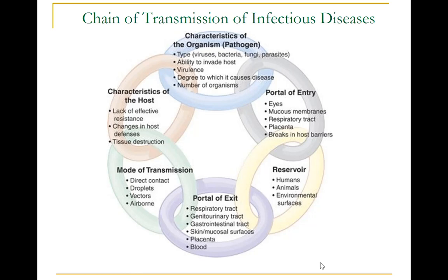This is known as the chain of transmission of infectious diseases. Infections can only spread when conditions are right. This set of conditions consists of six links, as shown here. When all the links are connected, infection spreads. Infection control and prevention provides the knowledge and skills to break the links in the chain and prevent new infections. The traditional epidemiological triad model holds that infectious diseases result from the interaction of agent, host, and environment. More specifically, transmission occurs when the agent leaves its reservoir through a portal of exit, is conveyed by some mode of transmission, and enters through an appropriate portal of entry to infect a susceptible host.